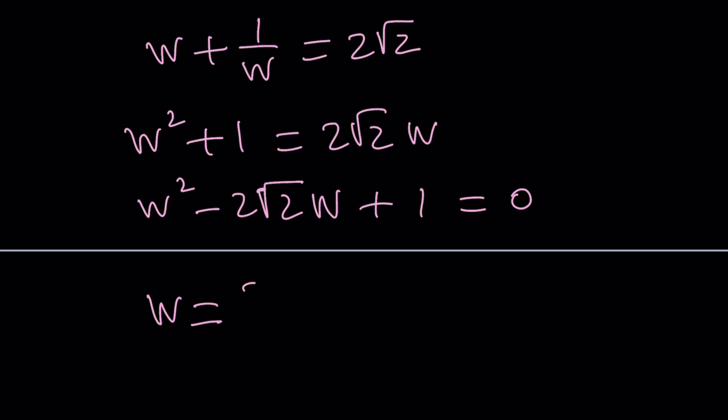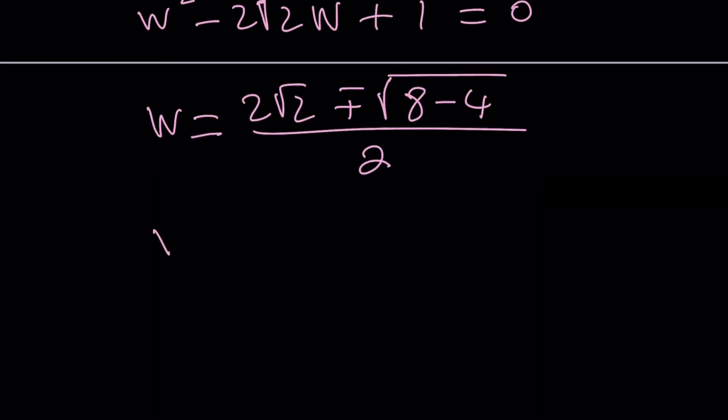That's more fun. So negative B plus minus the square root of B squared, which is going to give us 8 minus 4. Wait a minute. Is W a real number? Maybe it is. Who knows, right? And we're going to divide it by 2. Now, the square root of 4 is 2. So this is going to give us W equals 2 root 2 plus minus 2 divided by 2. And that's just root 2 plus minus 1.